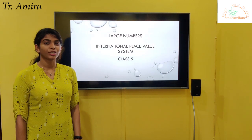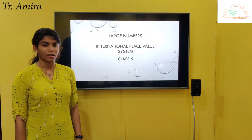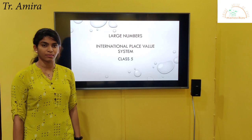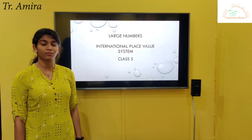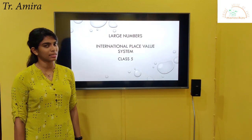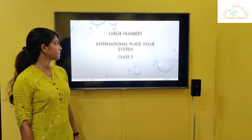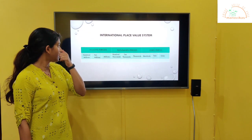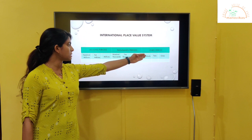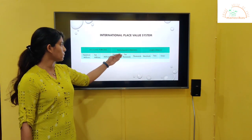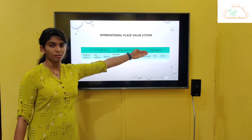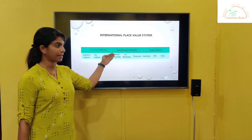Hello students, today we are going to study about the international place value system. The place value system which is used worldwide is known as the international place value system. It has ones period, thousands period, and millions period, and it starts from the right side.